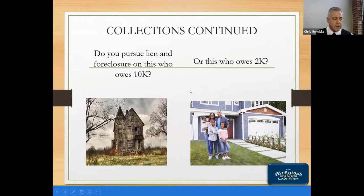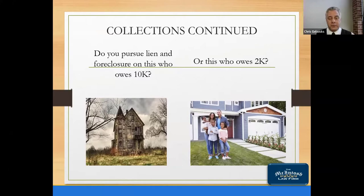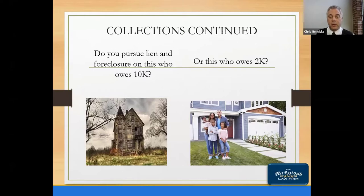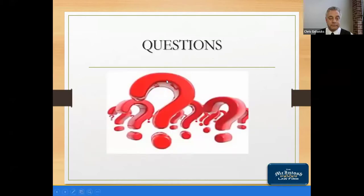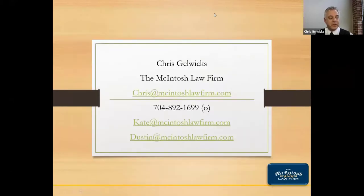Last slide: who do you foreclose on? You foreclose on the abandoned house that owes $10,000 to your association and hasn't paid in years, or do you pursue the owner-occupied house? If you have an owner-occupied unit, they care about keeping their house and are more likely to pay or make arrangements. An abandoned house — you may take title and then lose it to the bank. The owner-occupied property is where you most likely get paid. That's food for thought and strategy going forward. We are now at the question stage.